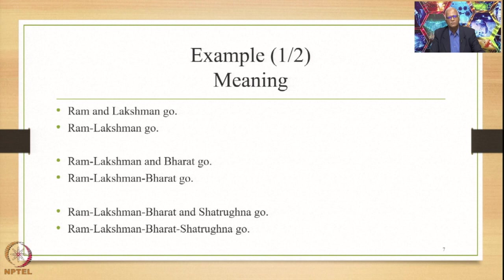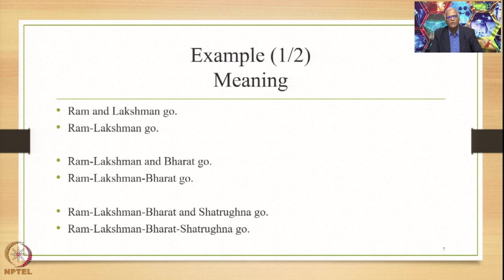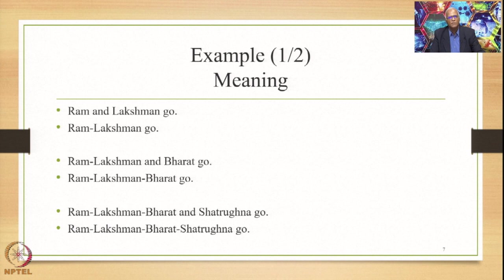Let us take an example. The first two bullets together give the meaning: Ram and Lakshman go, where Ram and Lakshman are independent meanings. The second bullet gives the compound meaning: Ram Lakshman go. Then the compound meaning Ram Lakshman is appended with another meaning, Bharat, and we have Ram Lakshman and Bharat go.